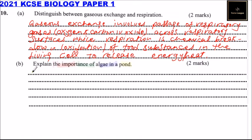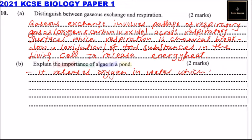For part B, explain the importance of algae in the pond. One importance is that algae releases oxygen into the water, which is used by other organisms.